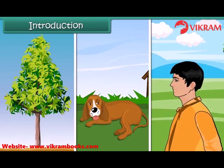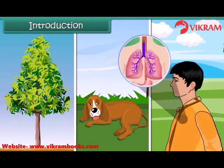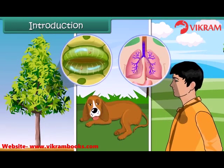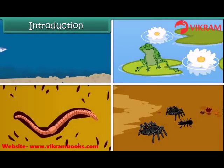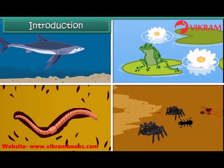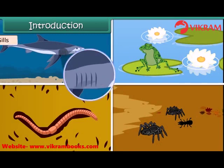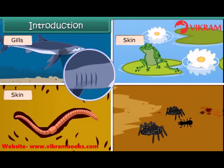While human beings respire through their lungs, plants do so through tiny holes in their leaves. Different animals have different organs that facilitate respiration. Fish breathe through their gills, frogs and earthworms through their skin, insects through their spiracles. In this lesson, we will study in detail the mechanism of respiration in human beings.